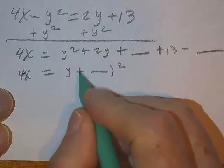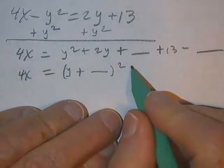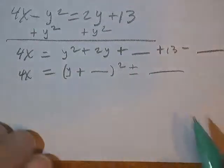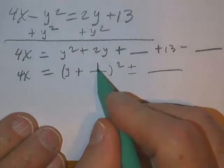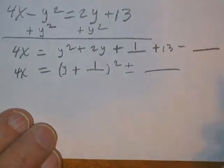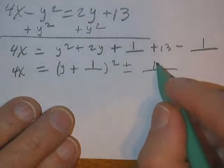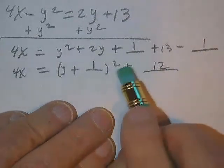Y plus a blank squared, plus or minus a blank. Half of 2 is 1, 1 squared is 1. I'm going to put a 1 over here. That's going to make this a positive 12.